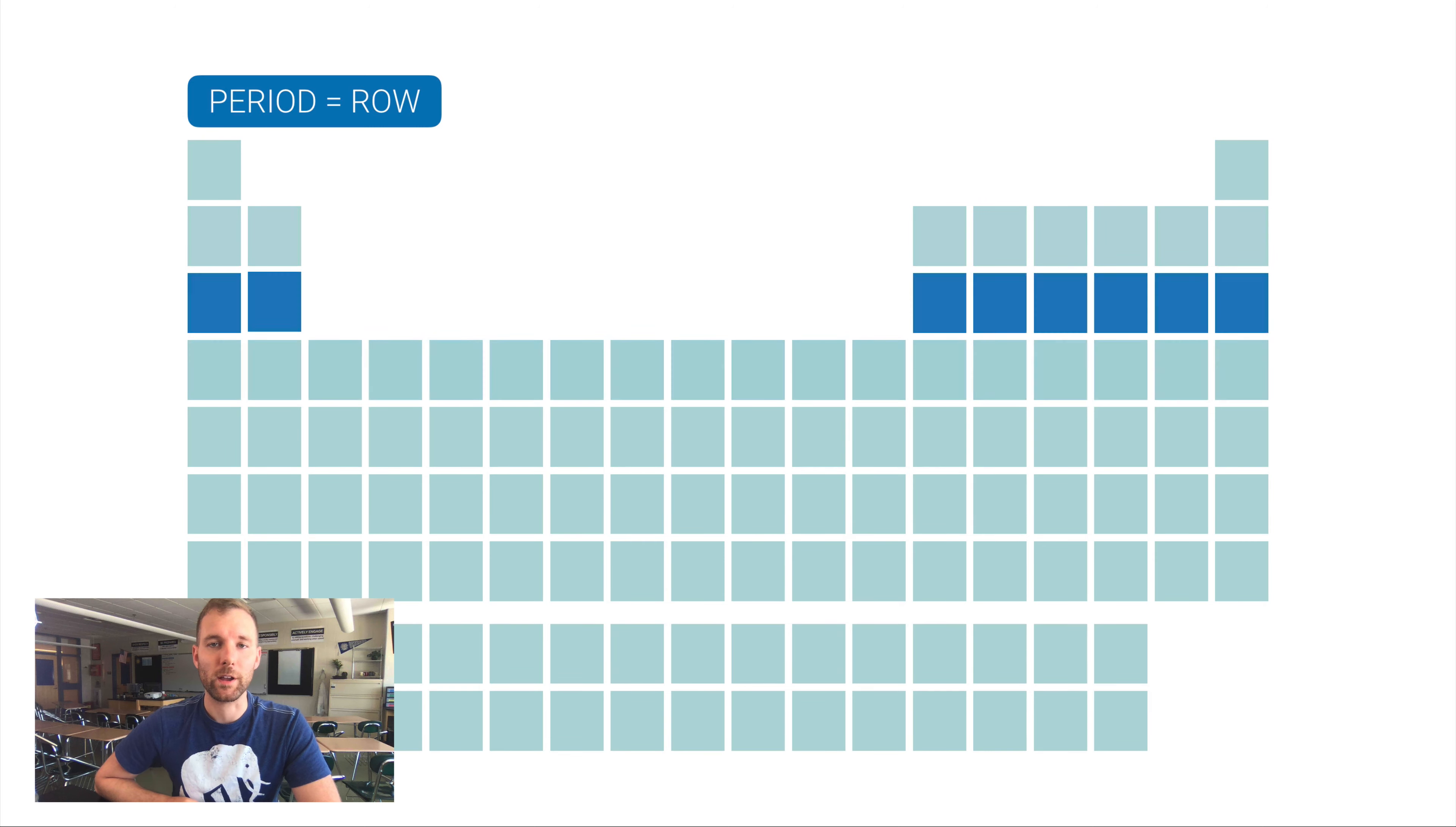We call rows periods, and there are seven periods in the periodic table to actually match the seven electron shells that can surround an atom. Columns in a periodic table are called groups, and there are 18 groups. Elements within a group are very similar. Sometimes groups are called families.